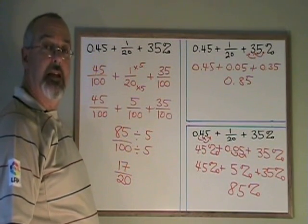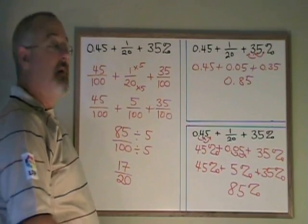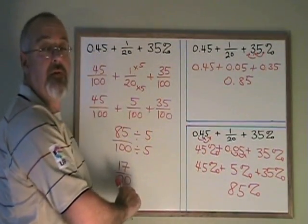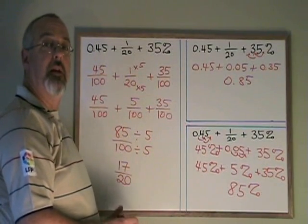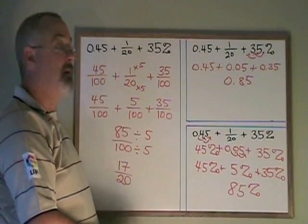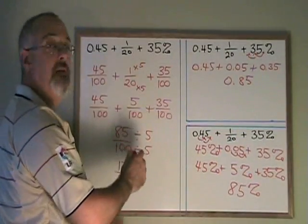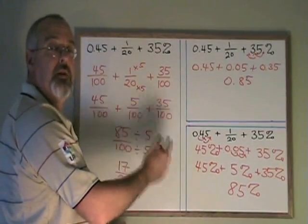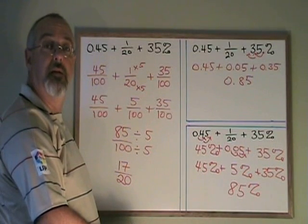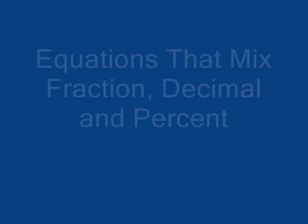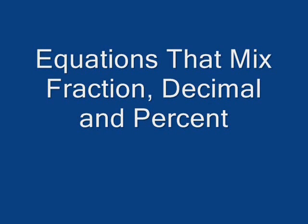If the instructions in your question say that you have to solve this by converting everything into a fraction, you have no choice. You have to follow the instructions. But if you're given a question and it is left up to you to decide how to solve it, you can convert everything into your favorite form, fraction, decimal, or percent. Once they're all in the same form, it's easy to combine them and get a final answer that is correct.